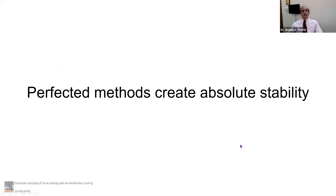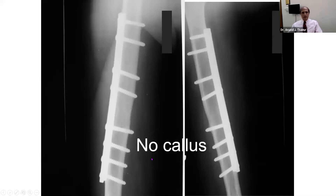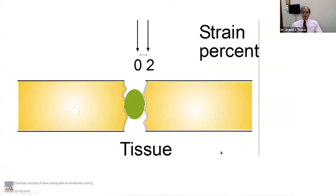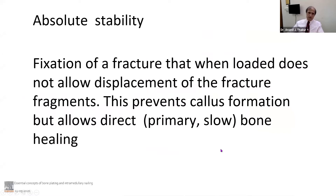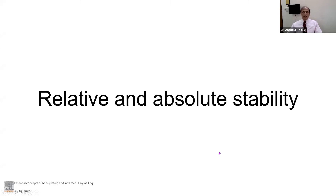If we improve stability by enhancing our technique and sophistication of fixation, this eliminates motion completely at the fracture site and still leads to healing, but there is no stimulus to form callus and callus does not form. End-to-end healing occurs — what we call primary healing. Perfected methods create absolute stability; there is no motion and no callus. The fracture heals directly from cortex to cortex because of superior plating technique with no movement whatsoever at the fracture site. We term this 0–2% strain — absolute stability.